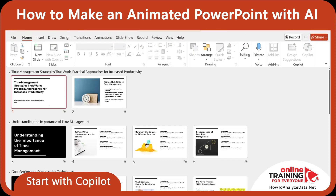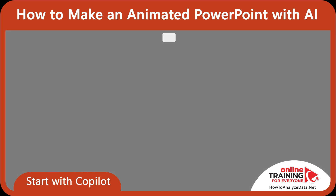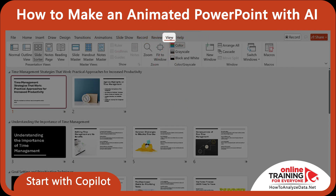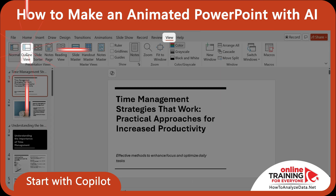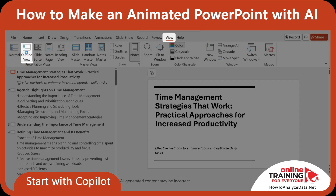By default, Copilot switched us to slide sorter view, which I rarely use, but it is part of PowerPoint. To change it, you click on 'View' and change either to normal or to outline master.